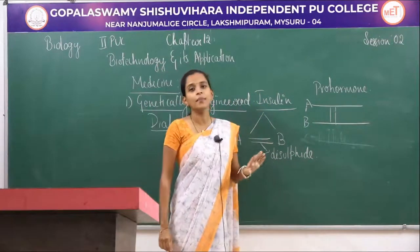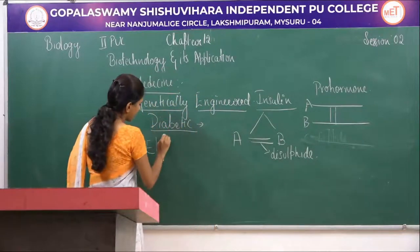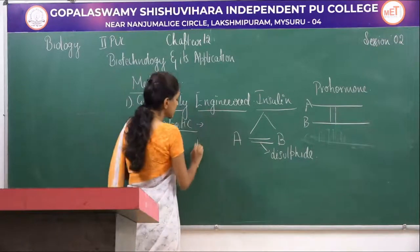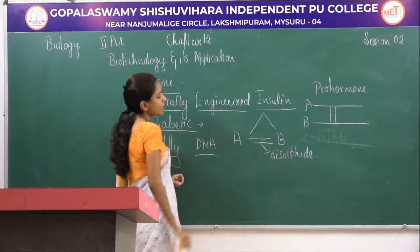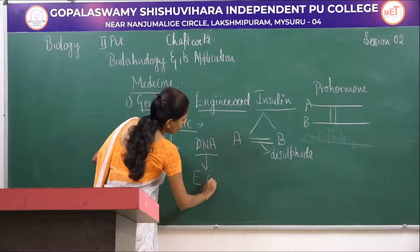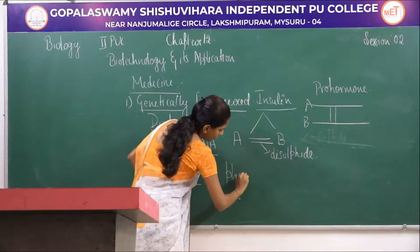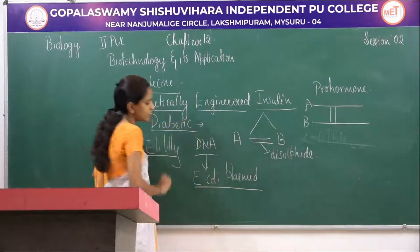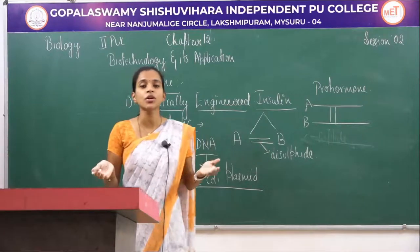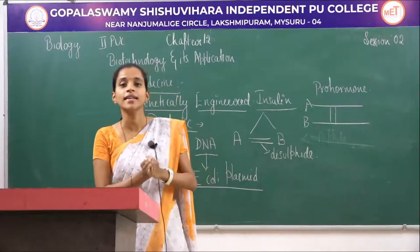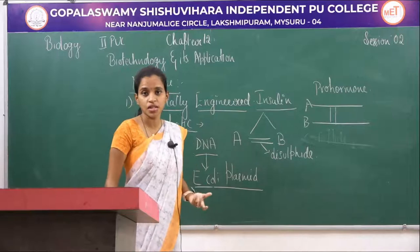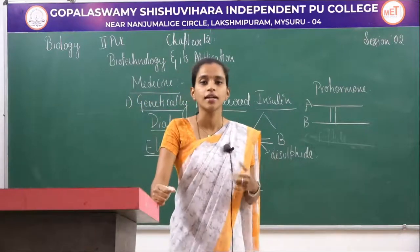An American company called Eli Lilly introduced DNA corresponding to the A peptide and B peptide into an E. coli plasmid. The A chain and B chain were produced separately, and once matured, they were held together with the help of disulfide bridges. This was how they could produce artificial insulin, and it is still successfully used throughout the world.